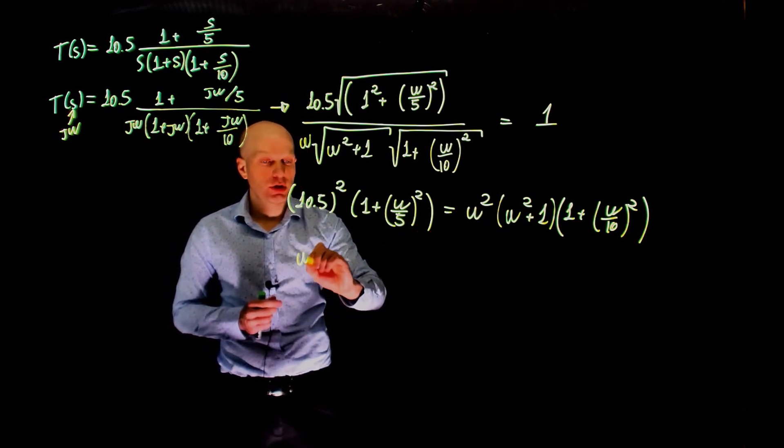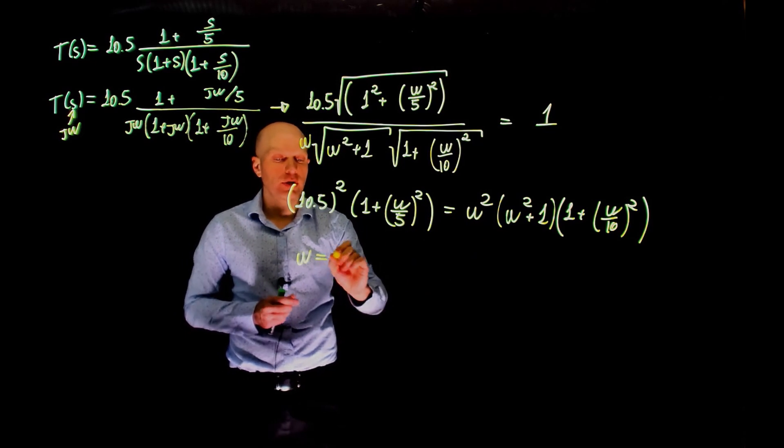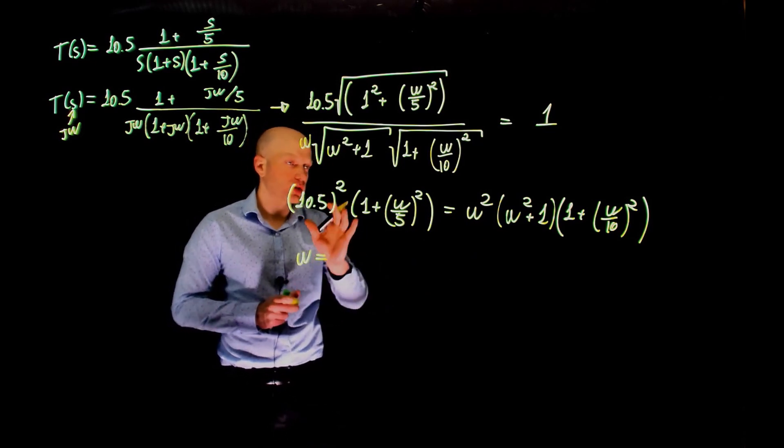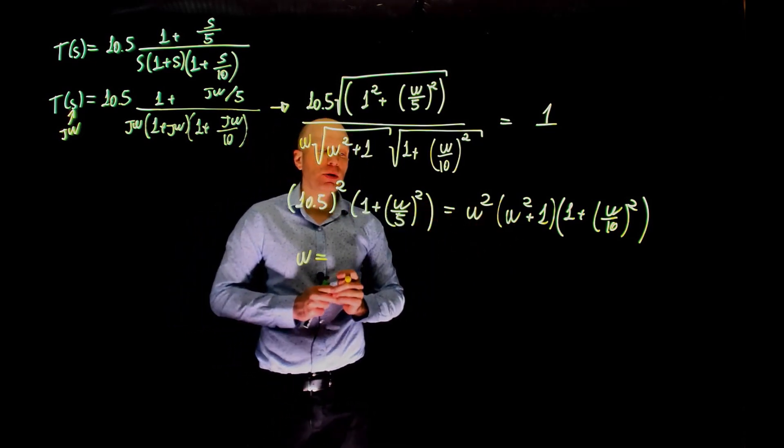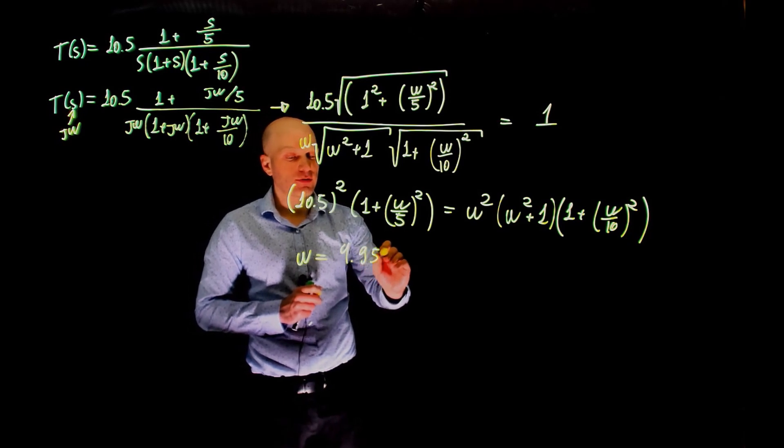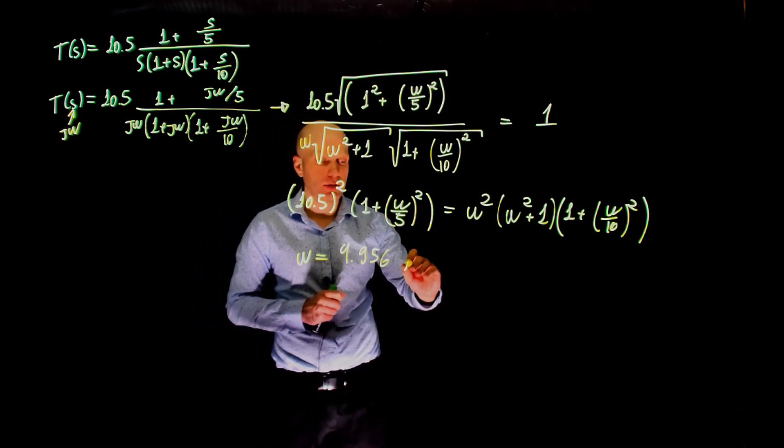I'll give the final answer here. If you isolate for omega and solve for it, the crossover frequency should be 4.956 or approximately 5 radians per second.